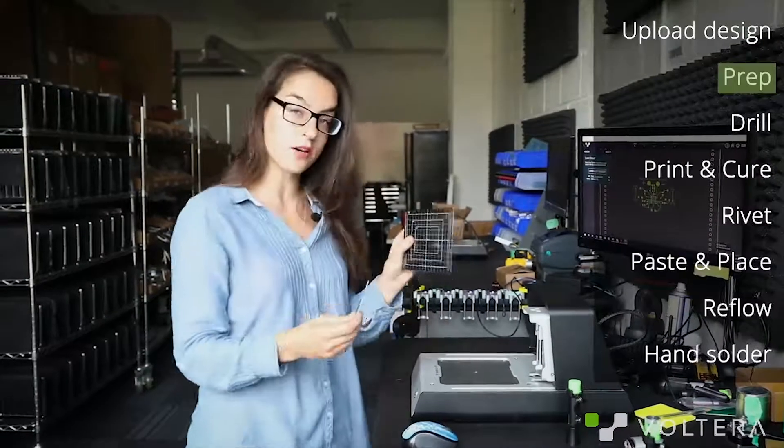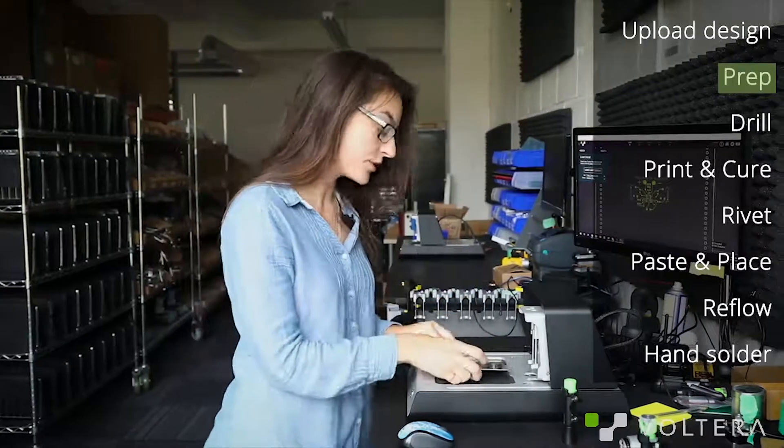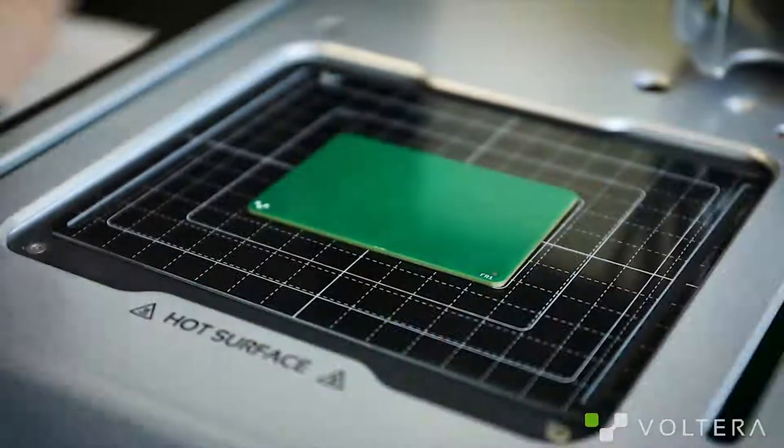Next, clamp down the sacrificial layer and the board. I'm using an FR1 board because we're going to be drilling into it.